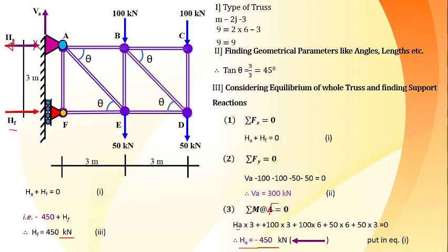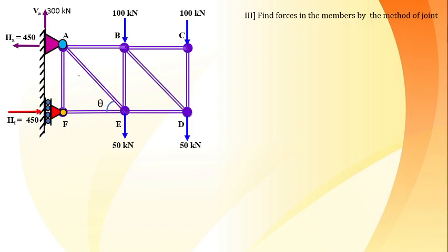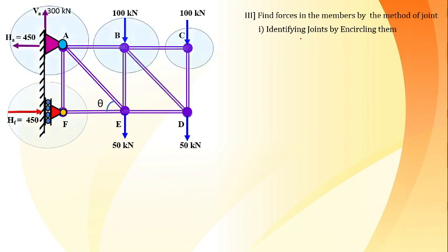With all support reactions known, the remaining task is to find the internal member forces. There are nine members. We identify and encircle each joint one by one — there are six joints total. Whatever forces fall within each circled joint form the free body diagram of that individual joint.